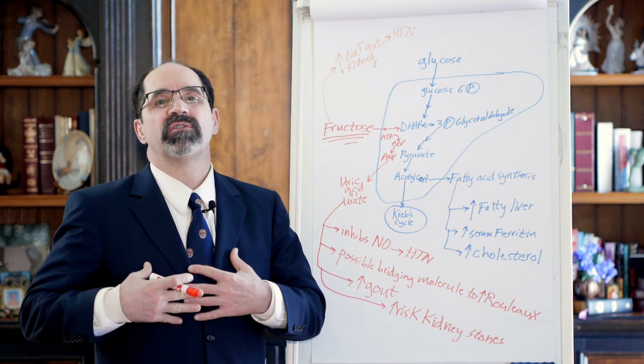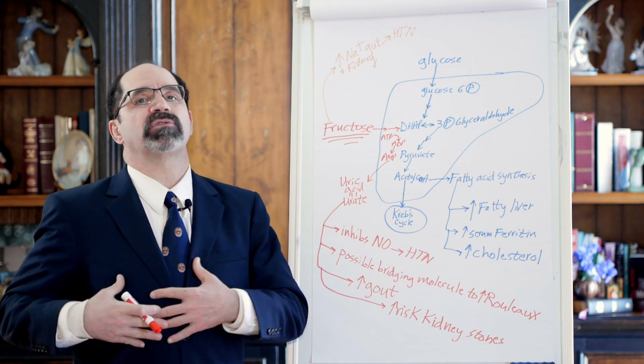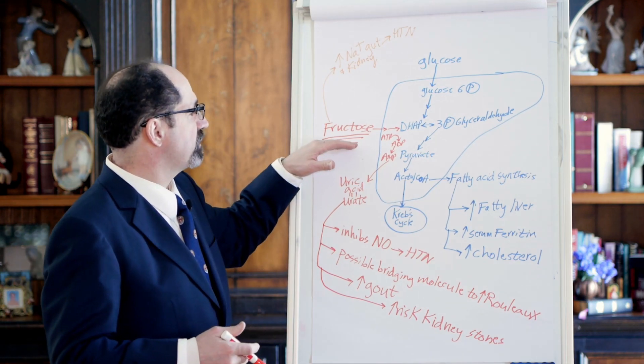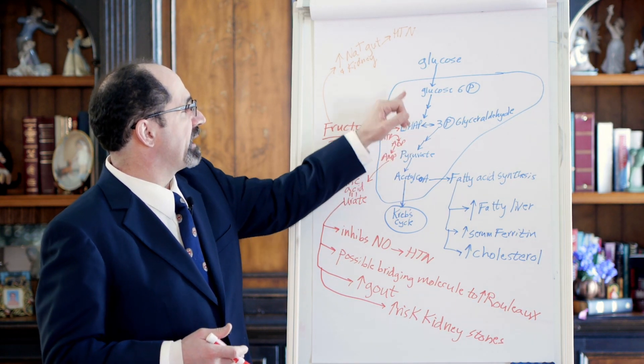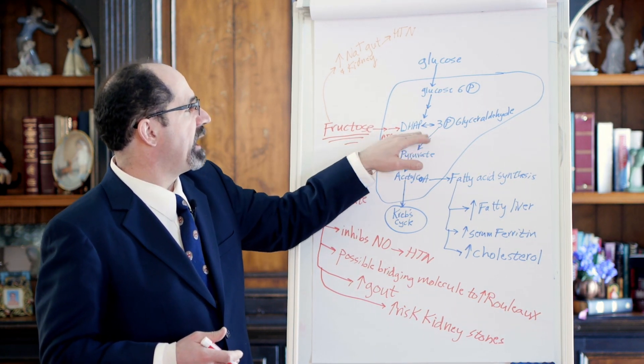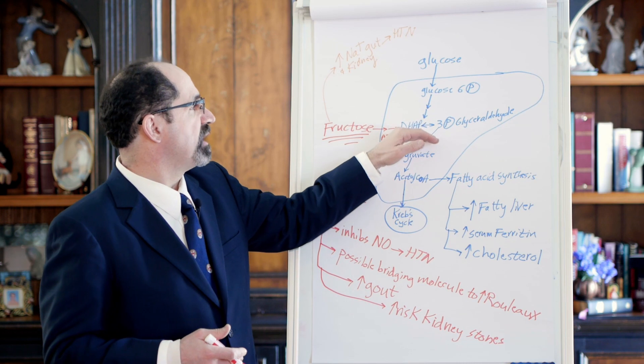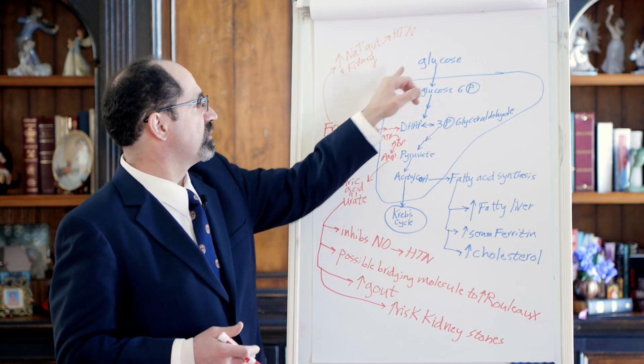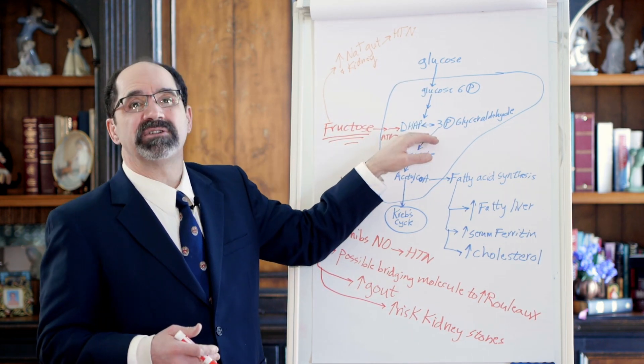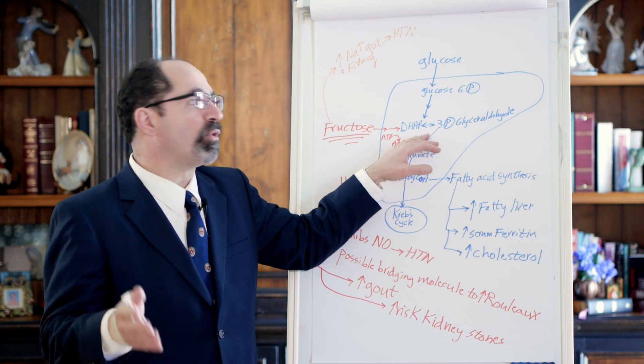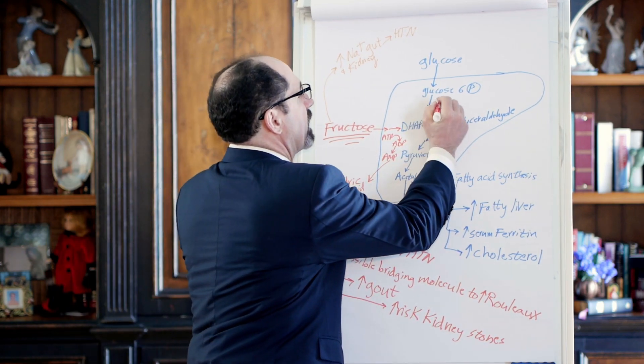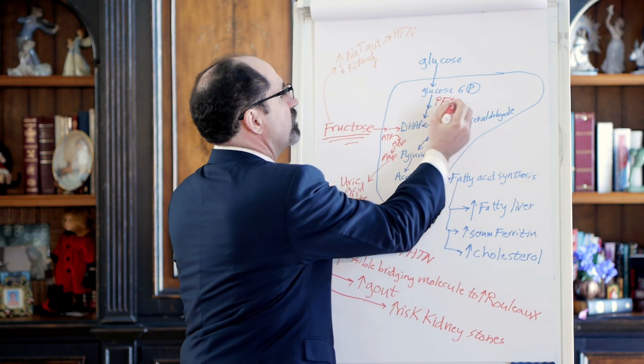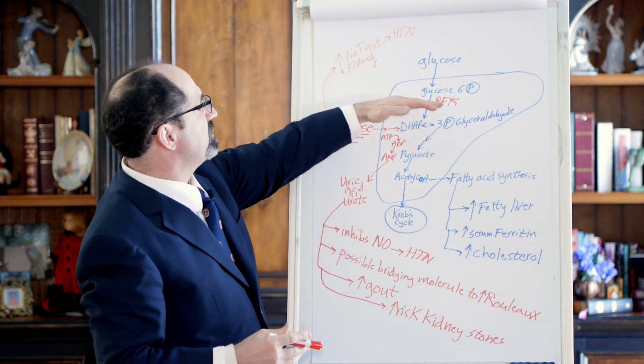The portal vein connects the gut to the liver, and there's a very high percentage for extraction of almost all that fructose by your liver. And then what your liver does is it takes the fructose, phosphorylates it, and then it goes into glycolysis at about the DHAP, 3-phosphoglyceraldehyde stage. This is after the six-carbon sugars like glucose and fructose have broken down into three-carbon sugars.